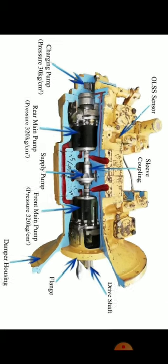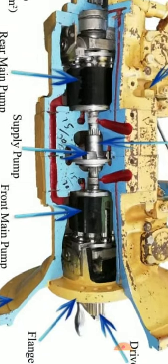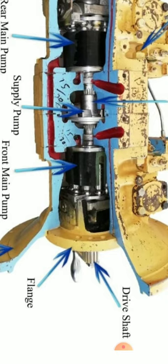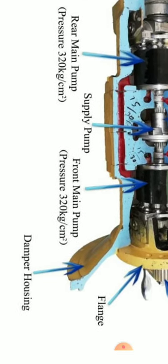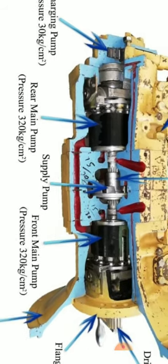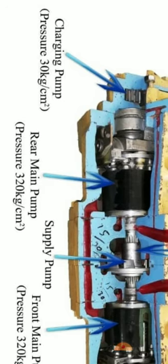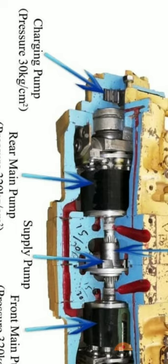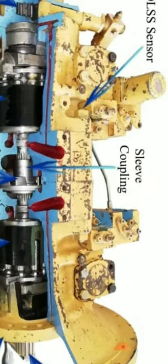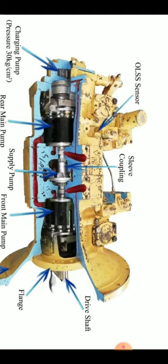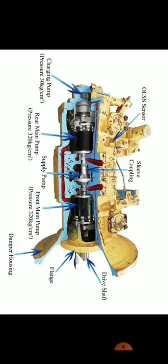Here we have a swashplate type pump. This is the front main pump side, which is on the engine side. We have drive shaft, drive flange for fittings, and damper housing. After that, we have the supply pump, fitted between both the pumps. Then we have the rear main pump and charging pump at the end, on the opposite side of the engine system. Here we have sleeve coupling and OLSS sensor system. This is the basic information of the swashplate variable displacement hydraulic pump.